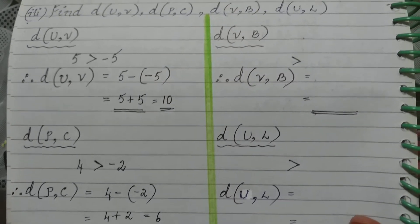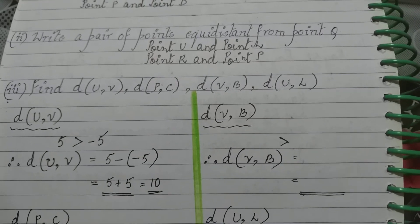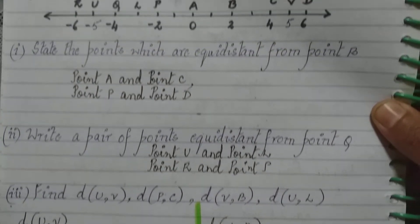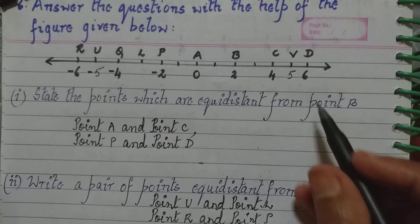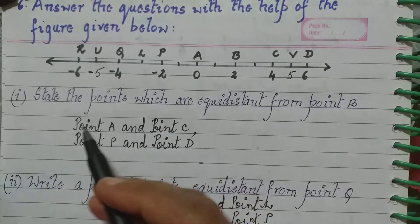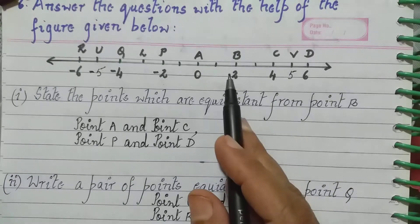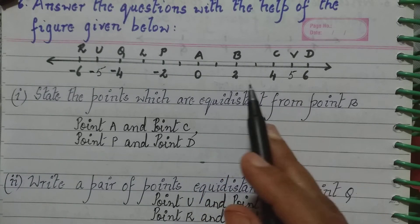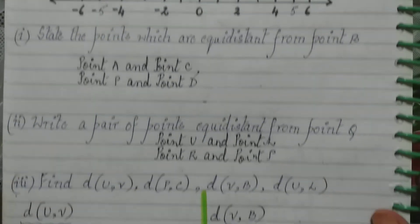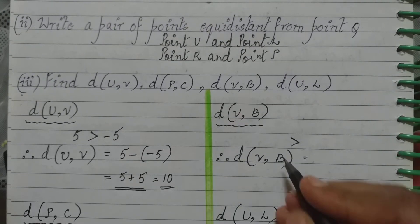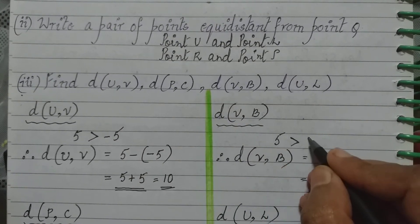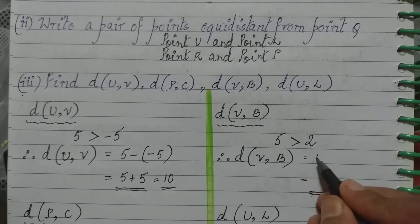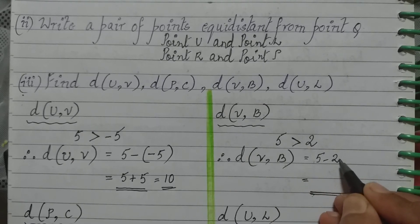Next, find the distance between points B and B. The coordinate of B is 5 and the other B is 2. Since 5 is greater than 2, the distance between the points is 5 minus 2, which equals 3.